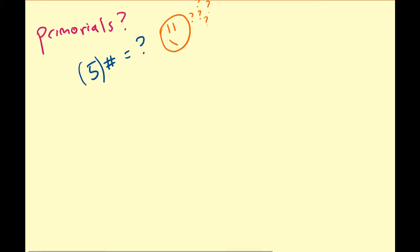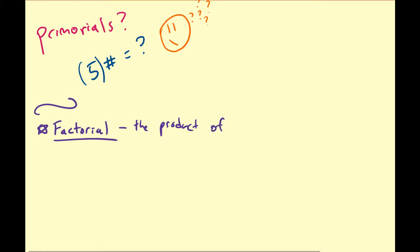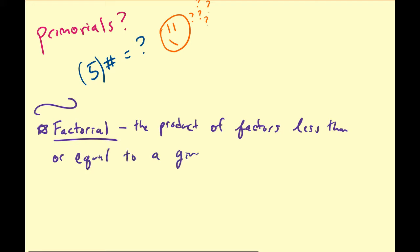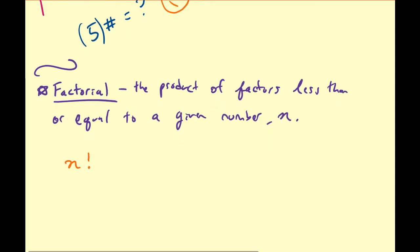Before we get into that, I'm going to briefly review something that you may have already heard of, and that is what we call a factorial. A factorial is the product of natural numbers less than or equal to a given number n, and we represent a factorial via n with an exclamation mark.